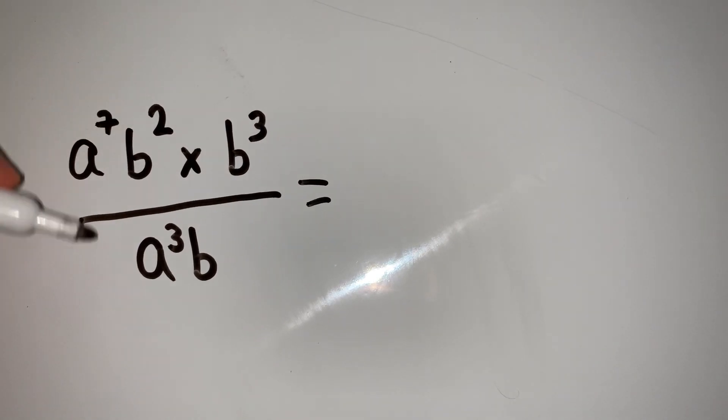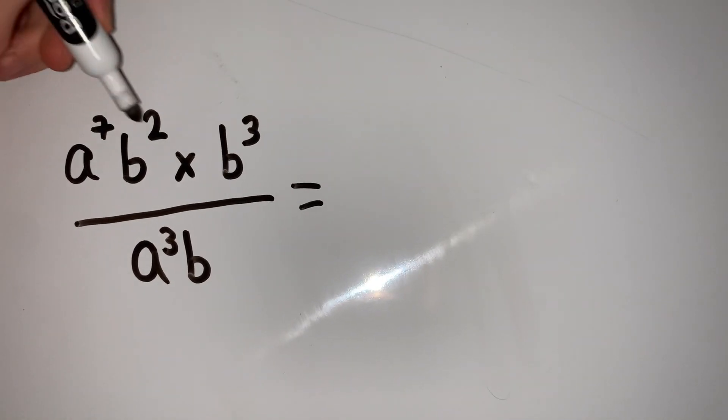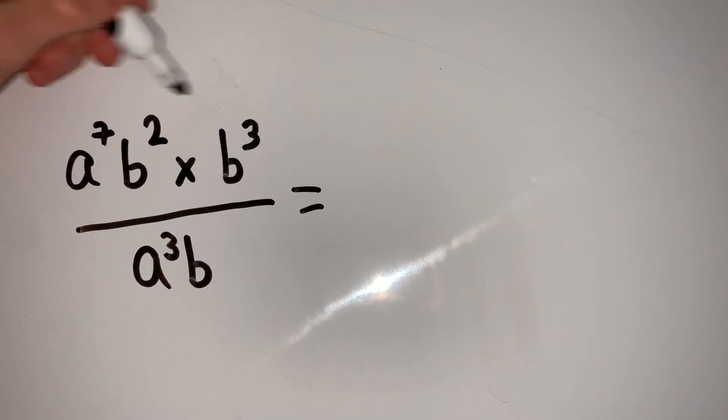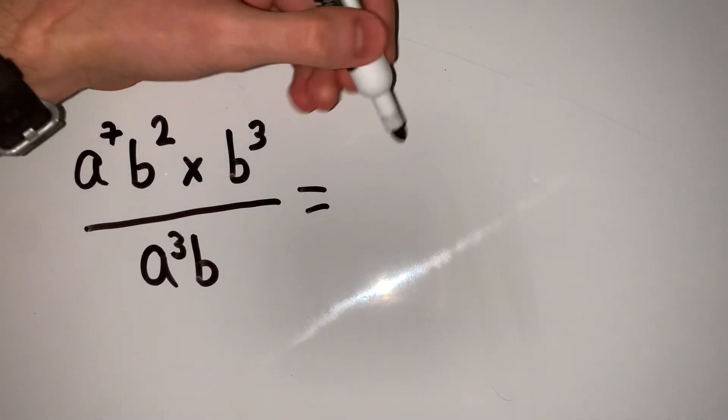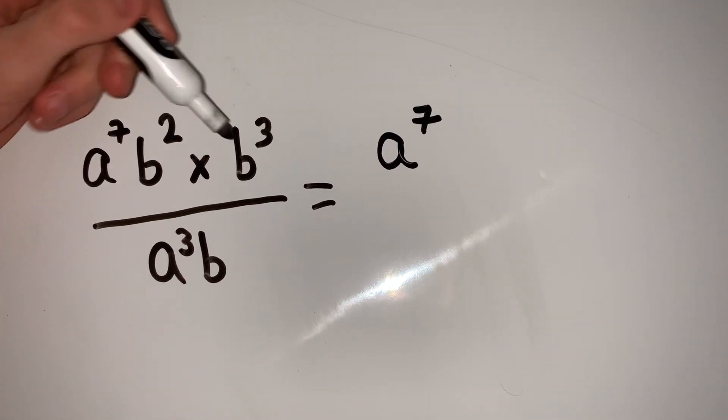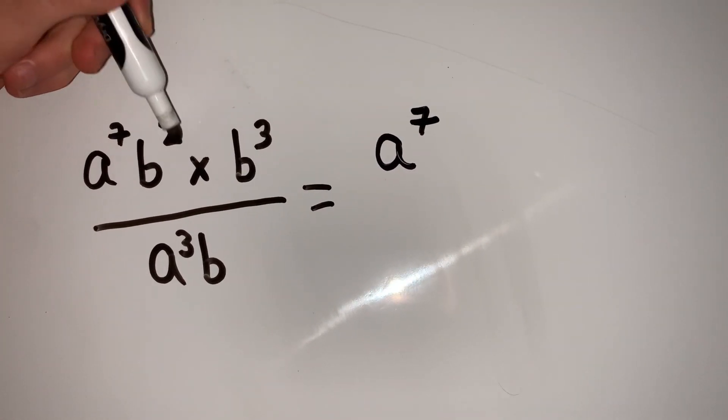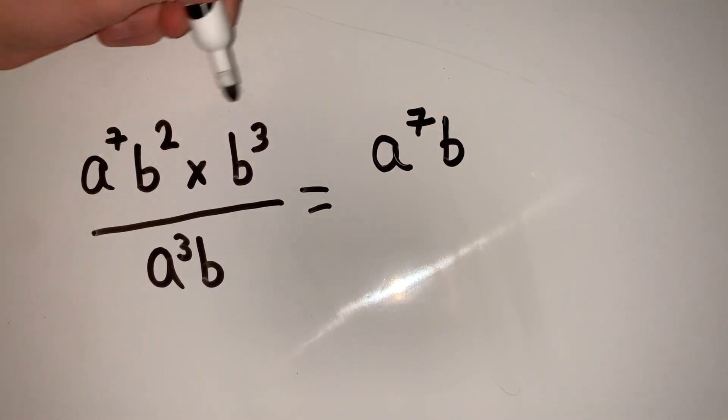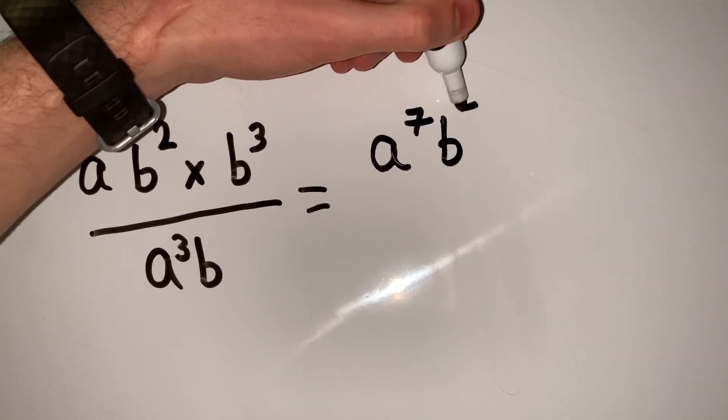Here's another example with more things going on at once. Let's go through this bit by bit. If we deal with the numerator, we have a^7. Then we have b^2 multiplied by b^3, so b^(2+3) equals b^5. We're dividing this by a^3*b.